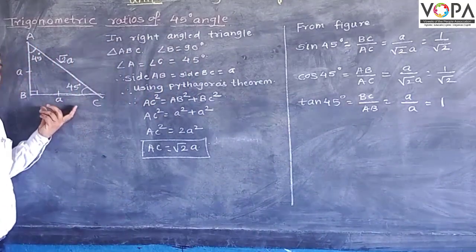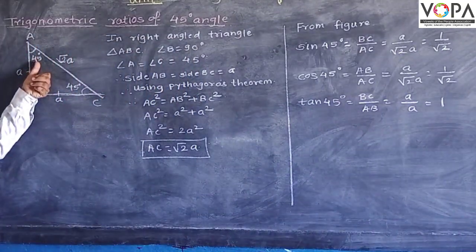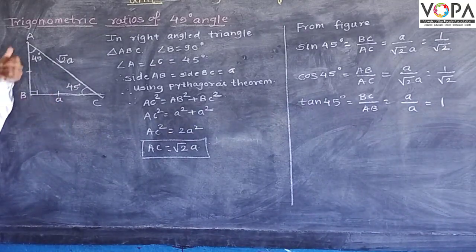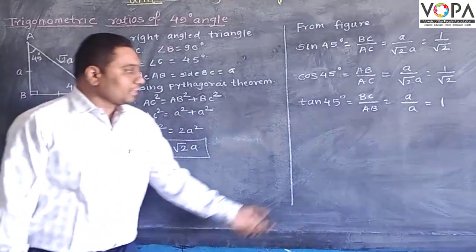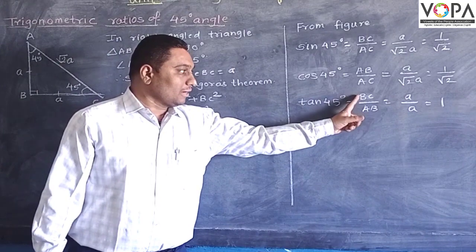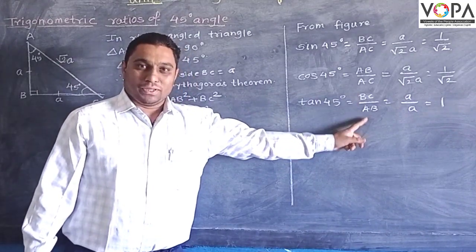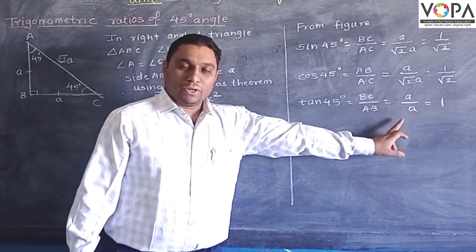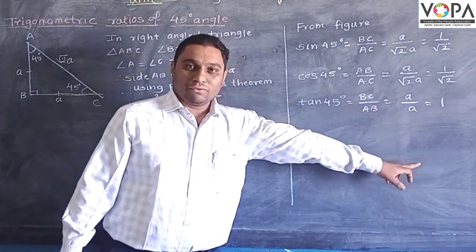Again you can see the figure. For this angle A, the opposite side is BC and adjacent side is AB. So therefore, tan of 45 degree angle is BC upon AB, which is equal to A upon A, which is equal to 1.